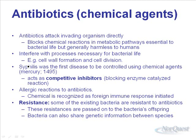Another sneaky thing bacteria can do — which you'll talk more about in Bio 30 — is share genetic information between species. One species of bacteria can conjugate or get together with another species and trade genetic information. It's kind of like imagining cats and dogs being able to join and share DNA — it's a weird ability but bacteria have it, and it's a way they can spread antibiotic resistance.